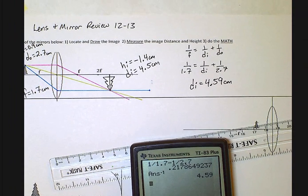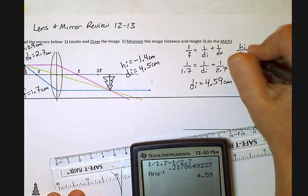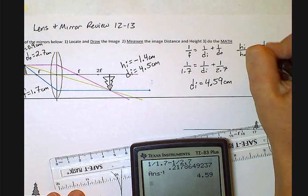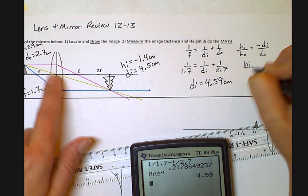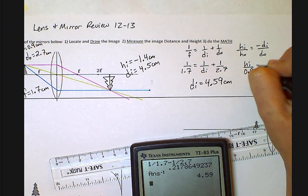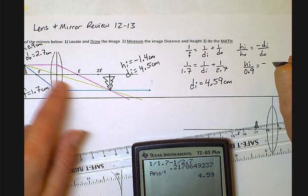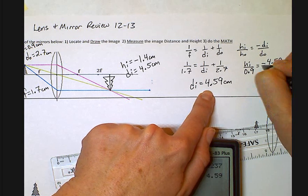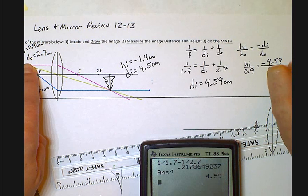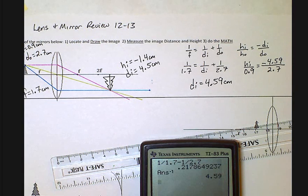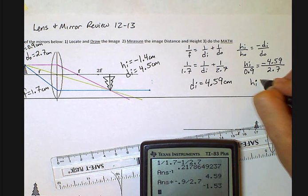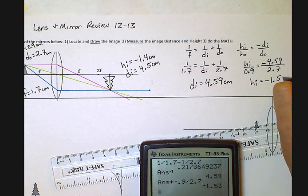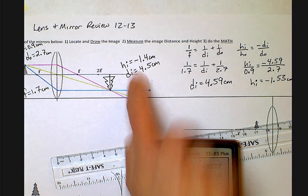And over here, I've got hi over ho is negative di over do. So hi over 0.9 equals negative di, which I just found here. I want to do all my math stuff together. Over do, which is 2.7. Cross multiply. And I should get height of the image is negative 1.53, which is pretty close. I got 1.4, 1.5.